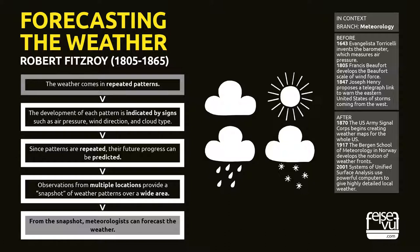Meteorology milestones: 1643, Evangelista Torricelli invents the barometer, which measures air pressure. 1805, Francis Beaufort develops the Beaufort scale of wind force. 1847, Joseph Henry proposes a telegraph link to warn the eastern United States of storms coming from the west. 1870, the U.S. Army Signal Corps begins creating weather maps for the whole U.S. 1917, the Bergen School of Meteorology in Norway develops the notion of weather fronts. 2001, systems of unified surface analysis use powerful computers to give highly detailed local weather.